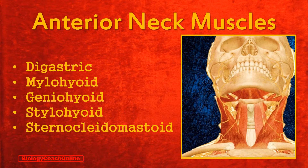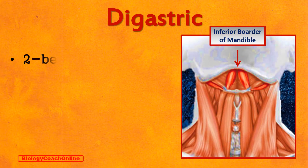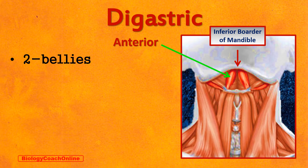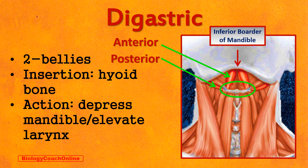The larynx is a structure of your respiratory system, which we'll see in detail in the next lecture. Don't be frightened by the names of these muscles — most of them tell you exactly what's going on. The digastric muscle has two bellies. The anterior belly originates on the inferior surface of the mandible at the chin, and the posterior belly originates on the lower region of the temporal bone. Both bellies insert on the hyoid bone, and their collective actions are to depress the mandible and elevate the larynx.